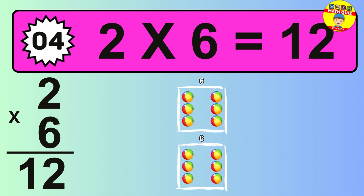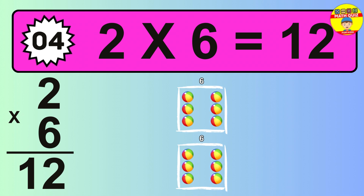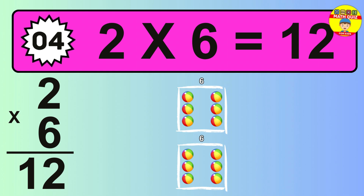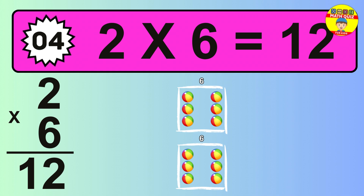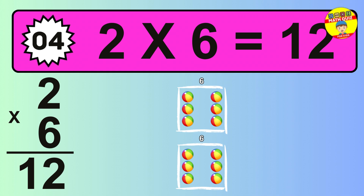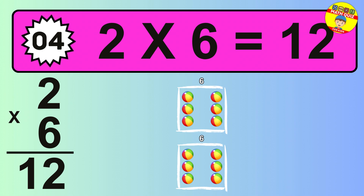The answer is 2 times 6 is 12. To calculate, we have 2 groups with 6 balls each one. So, how many balls do we have? 12 balls.